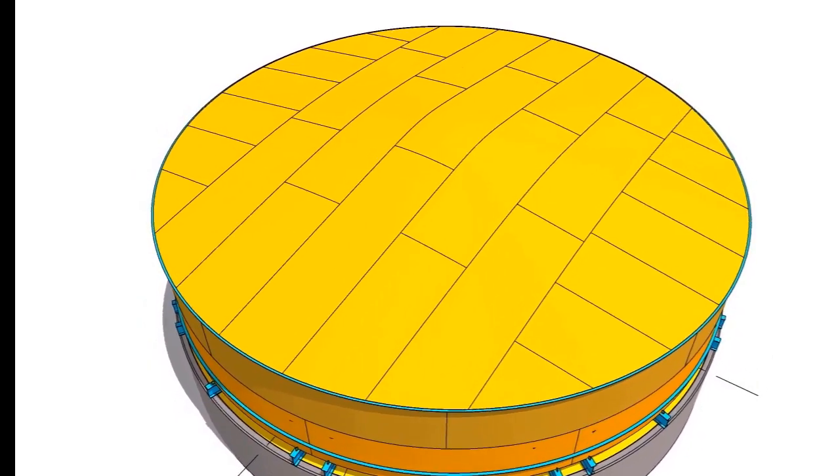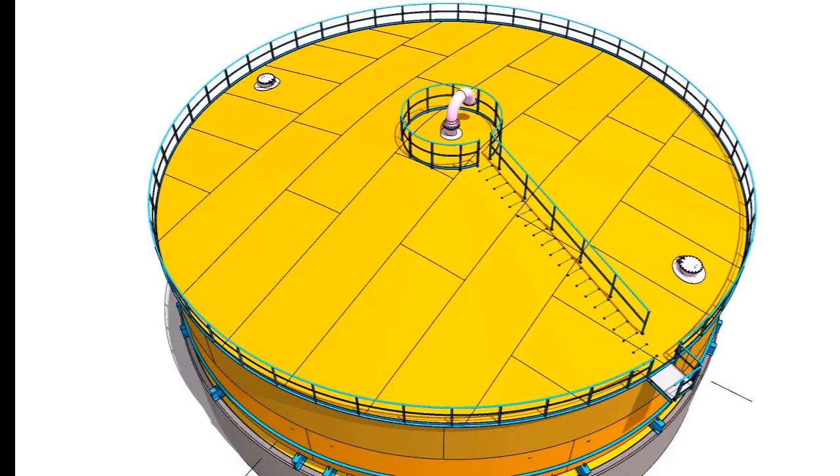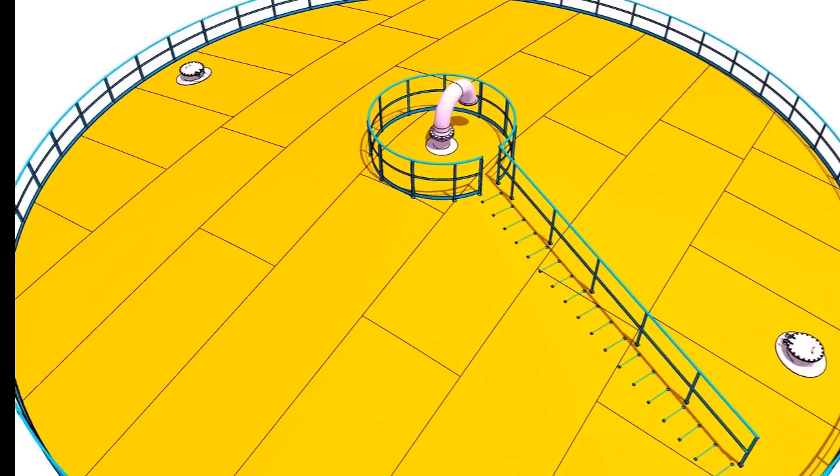Install the roof plates. After the completion of the roof plate welding, install the handrails, then the nozzles, manholes, roof vents, etc.